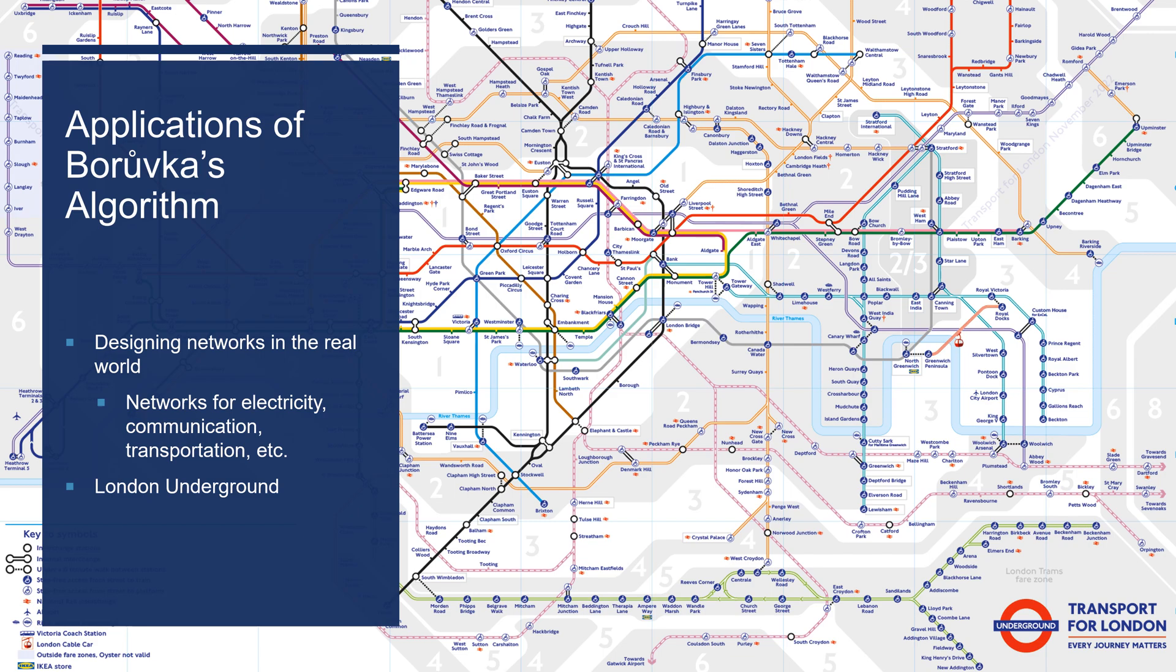The most obvious application is designing efficient networks for the real world. For example, TfL could use it for the London Underground when they want to add new lines, such as the Elizabeth line.